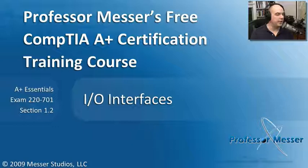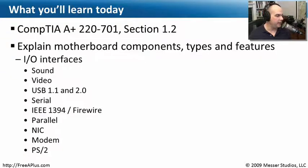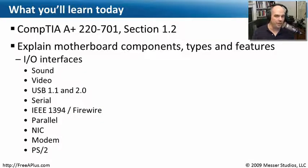Welcome to this module of Professor Messer's Free CompTIA A Plus Certification Training Course. I'm James Messer. In this module, we're going to look at I/O interfaces — the input-output interfaces on your computer. This comes from the CompTIA A Plus exam requirements of the 220-701 Essentials Exam, Section 1.2, where we need to know about these different I/O interfaces: sound, video, USB, serial, firewire, and more. For your A Plus exam, you need to be able to look at any one of those ports and know exactly what it is.